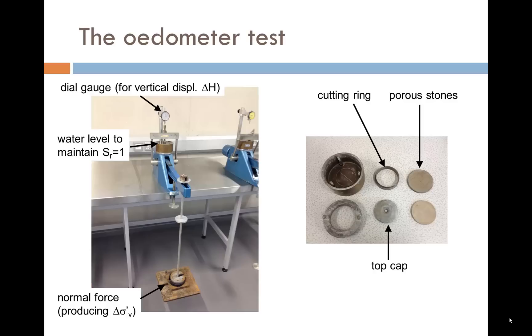The sample is taken using the cutting ring and assembled into the apparatus with porous stones top and bottom and the top cap through which the load is applied. The water level must be topped up periodically to ensure that the sample remains fully saturated throughout testing. The dial gauge mounted on top records settlement.